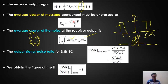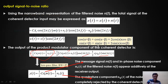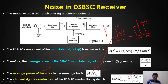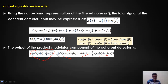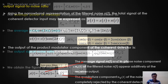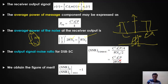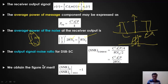Comparing the output SNR — c²·Ac²·P/(2·W·N₀) — with the channel SNR — c²·Ac²·P/(2·N₀·W) — both expressions are identical. Therefore the figure of merit, which is the ratio of output SNR to channel SNR, equals one. The DSB-SC receiver has a figure of merit equal to one, which means its noise performance is not better than the channel baseline — it is not greater than one.